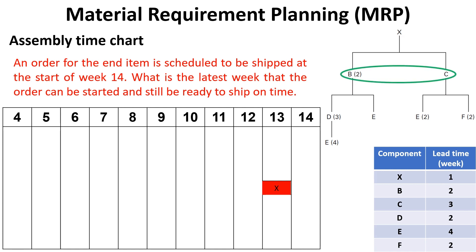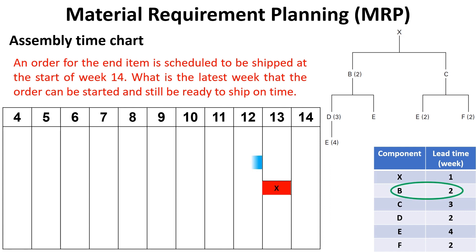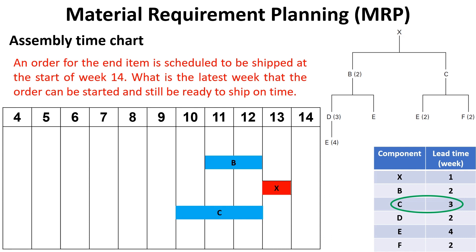The next level in the product tree tells us that the two subassemblies B and C are required for the end item assembly. The lead time for item B is two weeks, so going backward from week 13 start by two weeks means that the assembly of subassembly B must begin at week 11 start. While the lead time for item C is three weeks, so going backward from week 13 start by three weeks means that the assembly of subassembly C must begin at week 10 start.